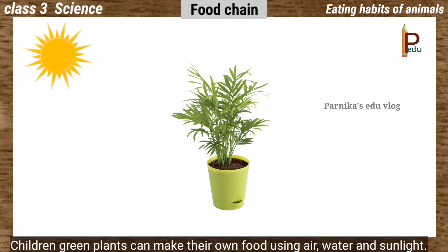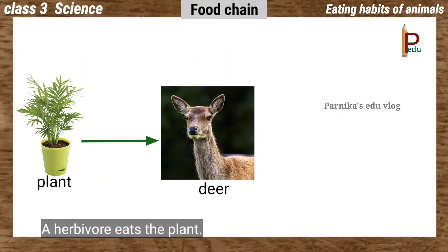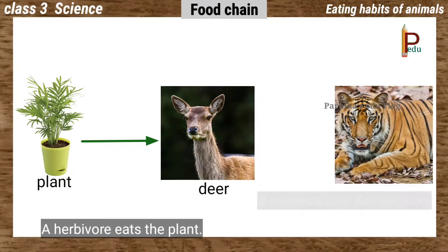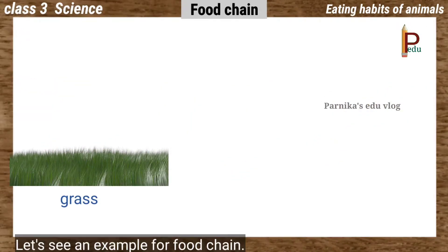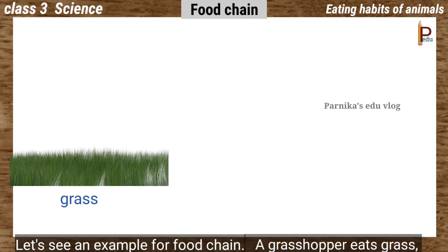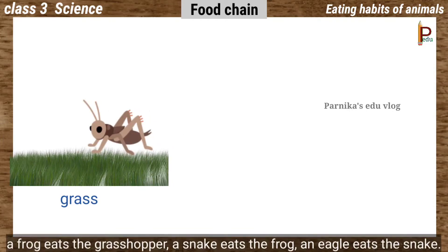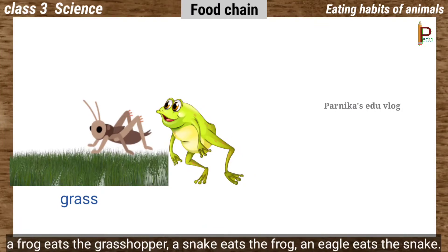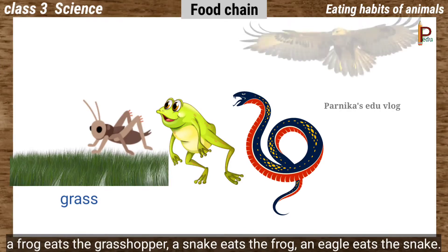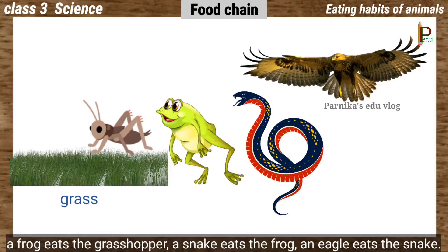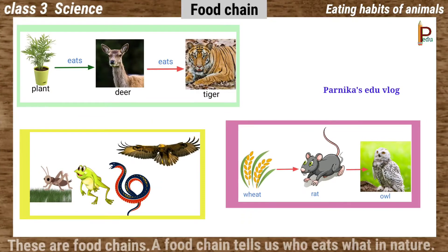Food chain: Green plants can make their own food using air, water, and sunlight. A herbivore eats the plant, a carnivore eats the herbivore. For example, a grasshopper eats the plant, a frog eats the grasshopper, a snake eats the frog, and an eagle eats the snake.